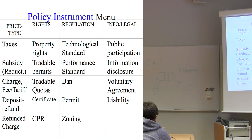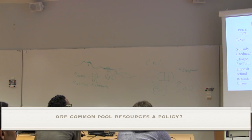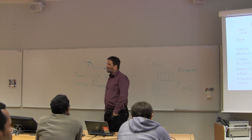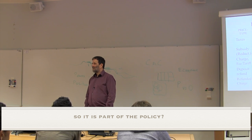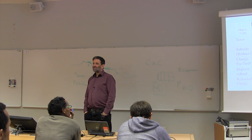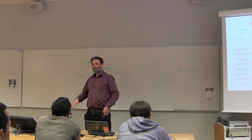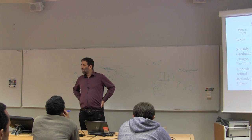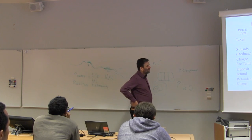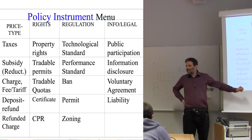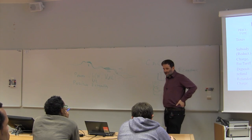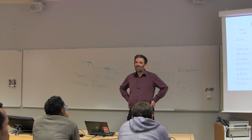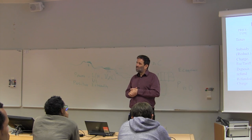We have all these regulation instruments. Common property resource management is when you have people locally managing a forest, a lake, a coast, a river, or an irrigation scheme. Elinor Ostrom wrote a number of books and articles on this, trying to find rules for what kind of schemes work and what kind don't.